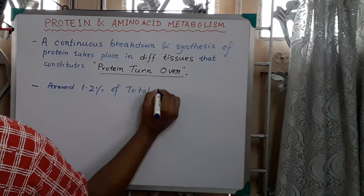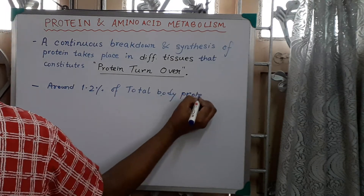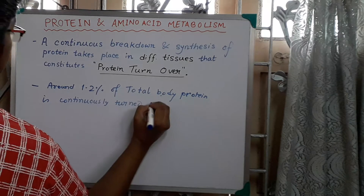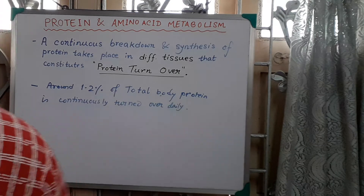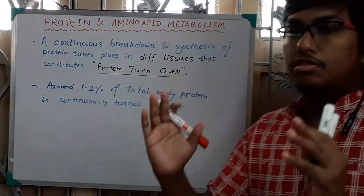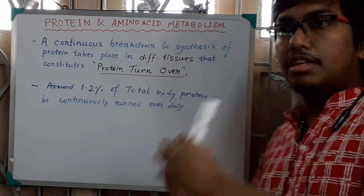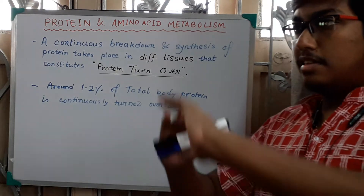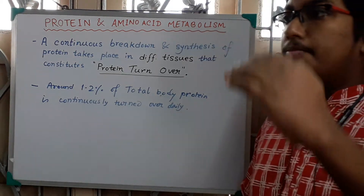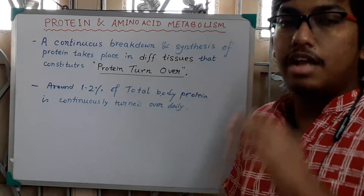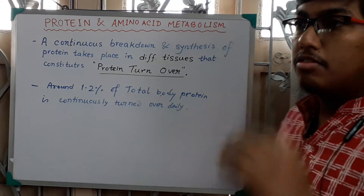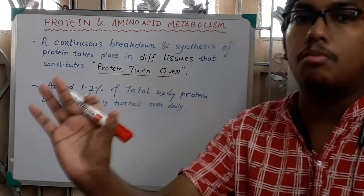Protein turnover means around 1 to 2 percent of our body protein is continuously turned over daily. Turnover means something is decomposed and simultaneously from the decomposed thing, new synthesis occurs. This is the maintenance of a dynamic equilibrium between breakdown and synthesis. In protein, protein will be catabolized into amino acids and from amino acids new protein will be generated. This dynamic equilibrium between protein breakdown and protein synthesis via the amino acid step is called protein turnover.